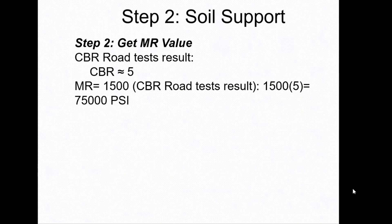The next part is soil support, which we determine from the California Bearing Ratio (CBR) and modulus of resilience (MR). In the AASHTO design, only MR values are used, which are derived from CBR. Using the formula MR = 1500 × CBR, with a given CBR of 5, we get a modulus of resilience value of 75,000 PSI.